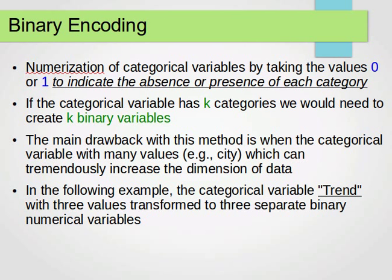For binary encoding, the categorical variables take values of either zero or one to indicate the absence or presence of each category. If the categorical variable has k categories, for example gender has male or female, that's two, then we need to create k binary variables. For gender, we need two binary variables, one for male and another for female. The problem with this approach is that if the number of values in the categorical variable is too large, we end up with too many columns or features.